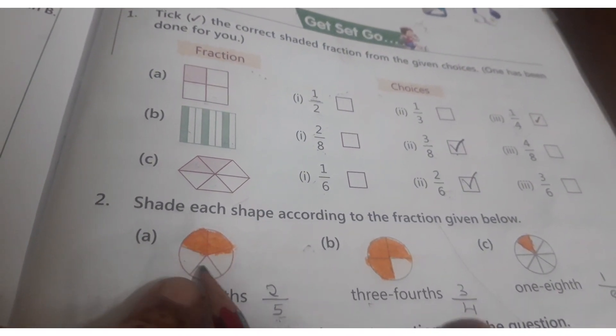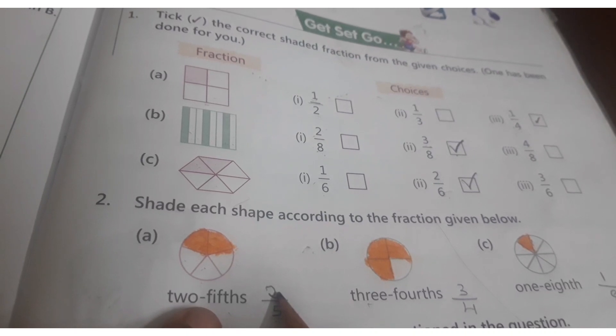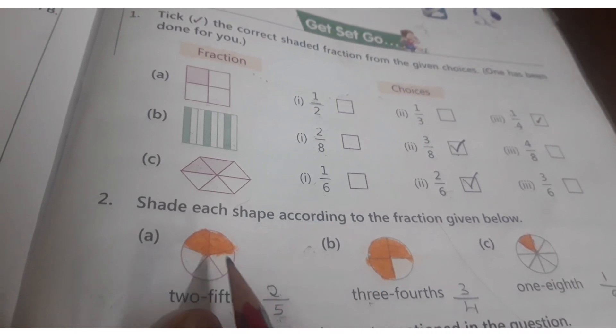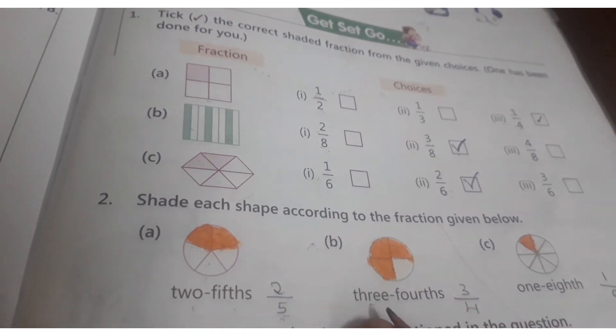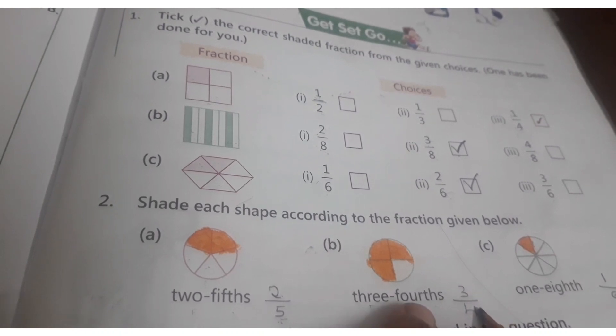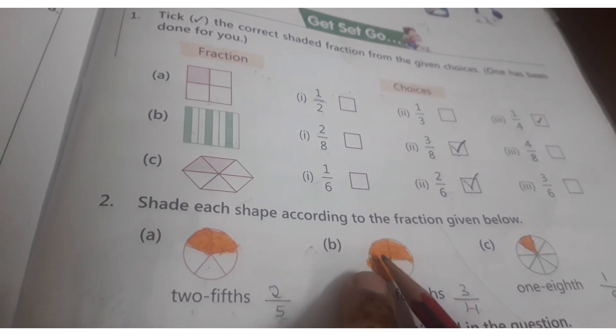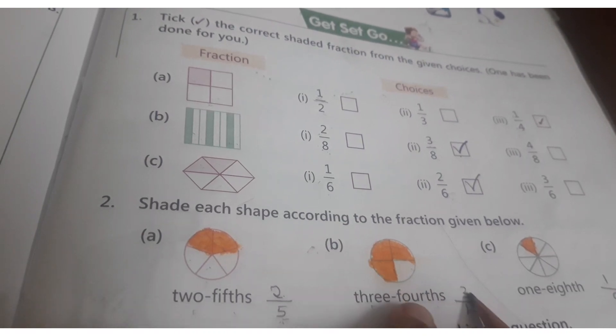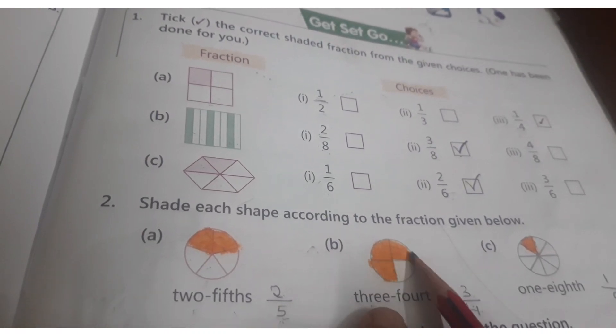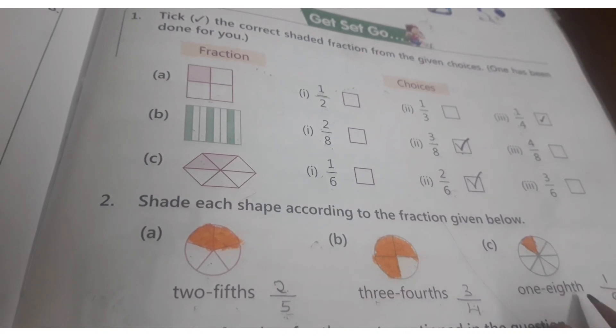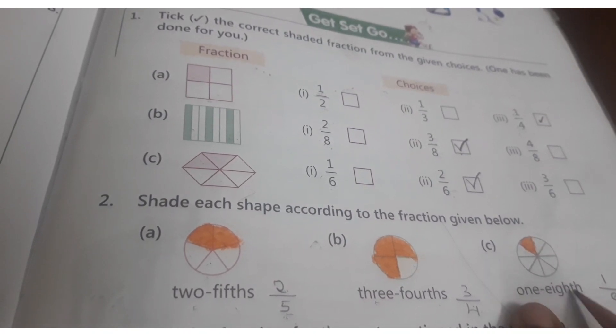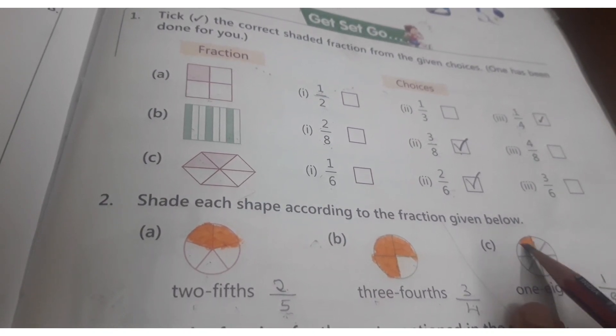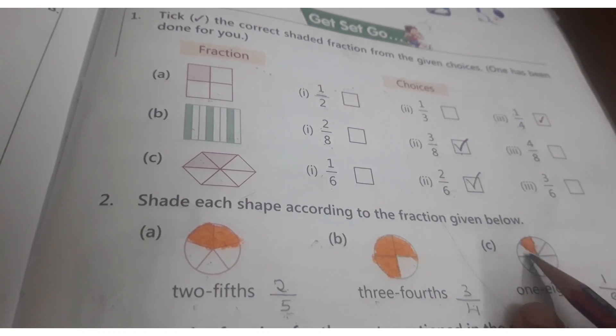5 boxes division hua hai. So numerator says 2, so 2 ko color karna hai. Then 3/4ths means 3 by 4. So here total 1, 2, 3, 4. 4 division hua hai. So 3 ko color karna hai. 1, 2, 3. You can color it in any color. 1/8th, 1 by 8. So 1, 2, 3, 4, 5, 6, 7, 8. So 1 ko color karna chahiye hai.